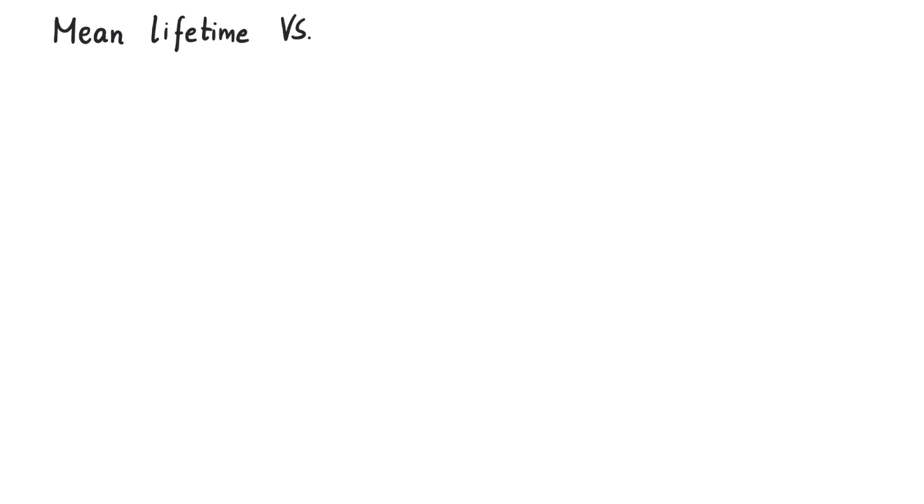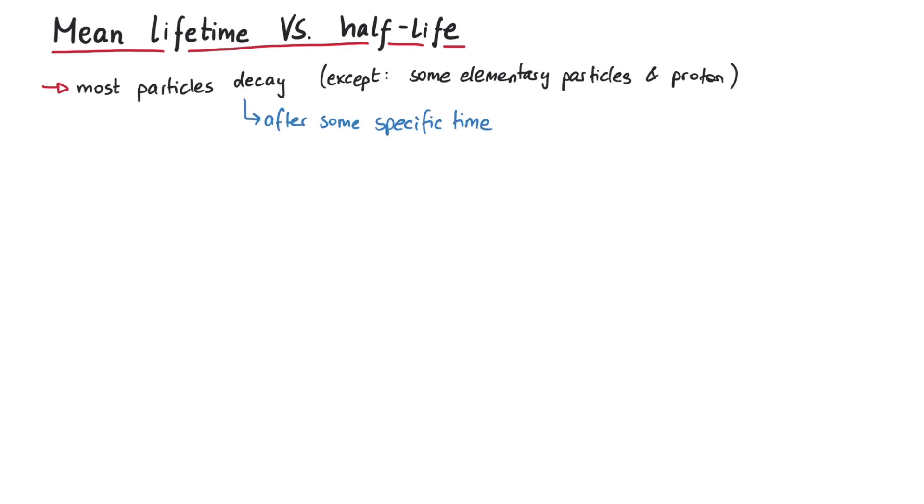In this video we will explain the difference between the mean lifetime and the half-life of a particle. Basically all particles decay in some way, except for elementary particles and the proton, and they undergo this decay after some specific time. We can express this time as the mean lifetime or the half-life of a particle, but what's the difference?